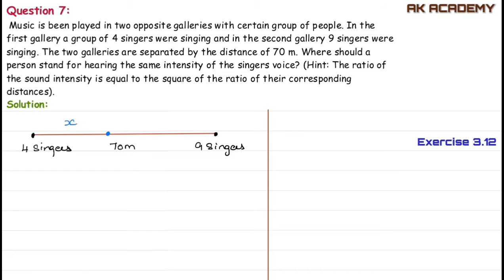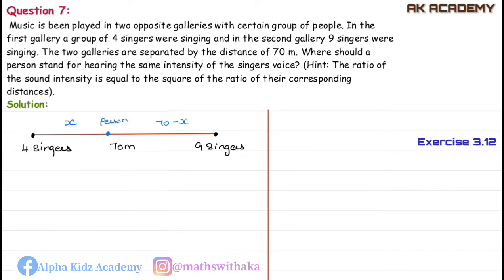Let the distance from the person to the 4-singer gallery be x. Then the distance to the 9-singer gallery is 70 minus x. We use the hint: the ratio of sound intensity is equal to the square of the ratio of their corresponding distances.